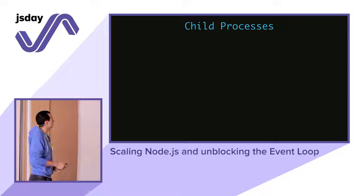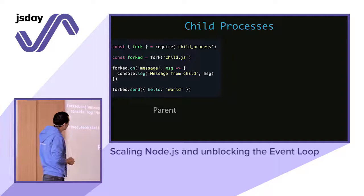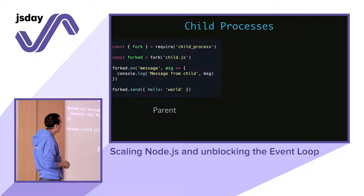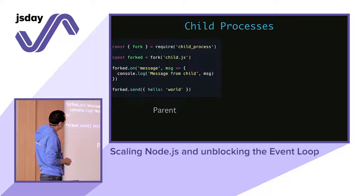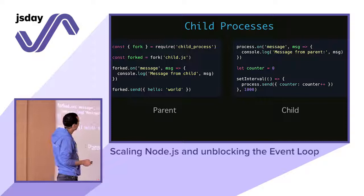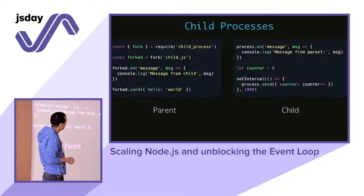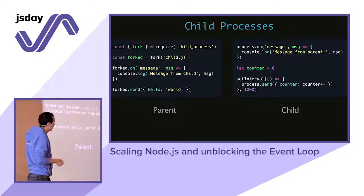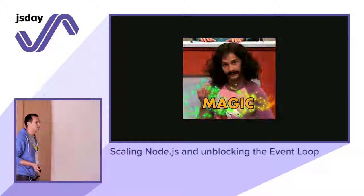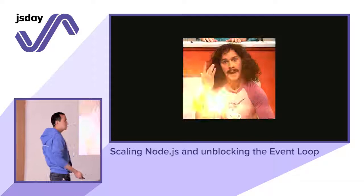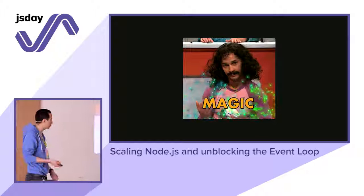Let's take an example of what a child process looks like when you require the API and fork. Forking is just calling a node process with a script. It will receive a message from the child process — 'a message from child'. We send that child process a hello world object. On the child side, if we listen for a message, we print it out. We have a counter starting at zero, and we send back to the process. It's like magic — but it's completely manual work.